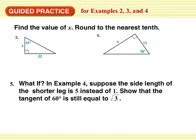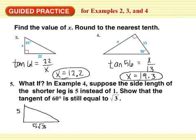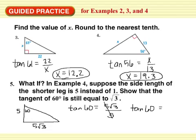Find the value of X, rounded to the nearest tenth. For number 5: suppose in example 4 the shorter leg is 5 instead of 1. Show that the tangent of 60 is still equal to the square root of 3. If the short leg is 5, then the longer leg is 5 times the square root of 3. The tan of 60 is opposite over adjacent — 5 root 3 over 5 — the 5s cancel, and the tangent of 60 is still the square root of 3.